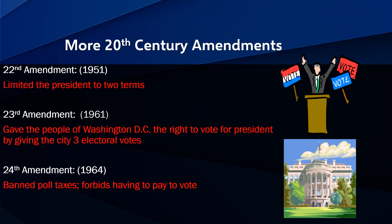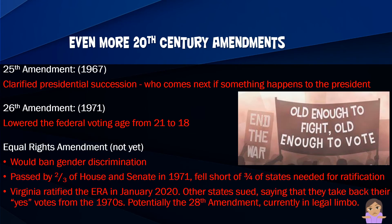The 22nd Amendment limited the president to two terms. Franklin Roosevelt had been elected four times — it was only a tradition to serve twice, but he was elected again during the Great Depression and again during World War II. After that, two terms is the limit. The 23rd Amendment gave Washington D.C. three electoral votes so its residents could vote for president. The 24th Amendment banned poll taxes, which had been used to prevent certain people from voting by requiring a large tax.